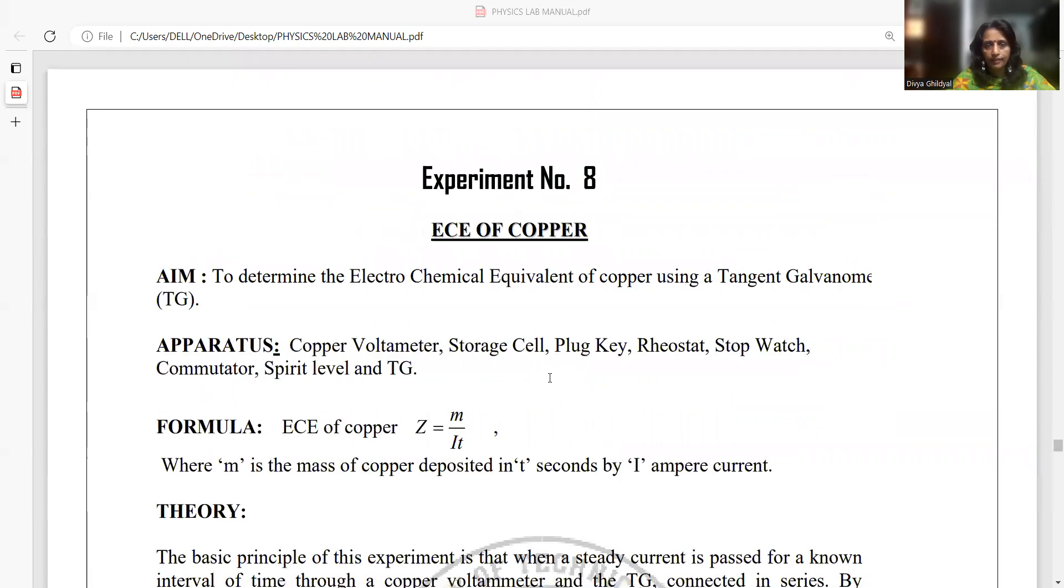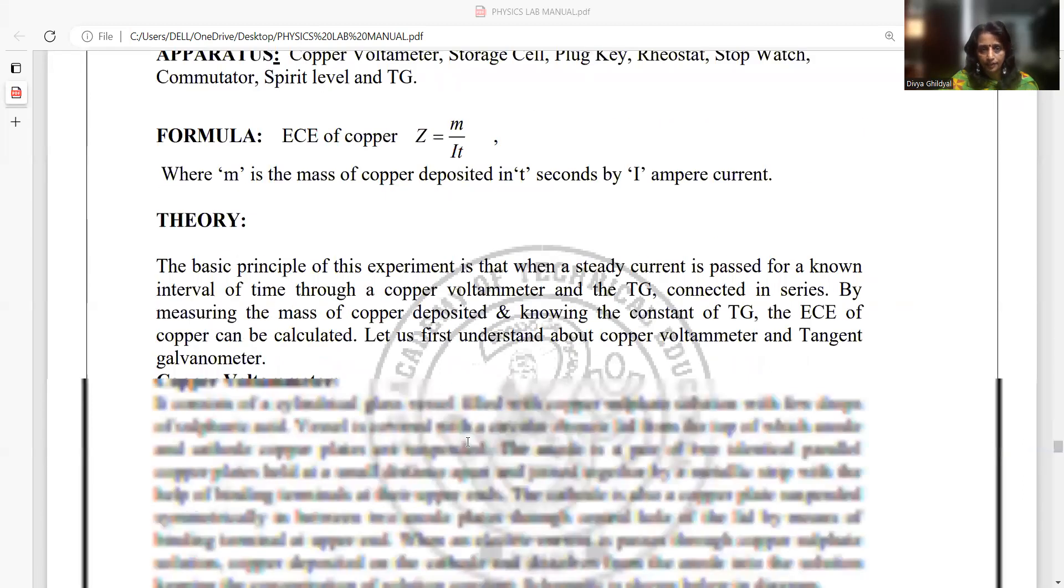Next, electrochemical equivalent of copper. My aim of experiment is to find the electrochemical equivalent of copper once again using a tangent galvanometer. Apparatus required is copper voltameter, storage cell, plug key, rheostat, stopwatch, commutator and tangent galvanometer. Formula used is ECE or electrochemical equivalent = mass / (current × time), or M = ZIT, or Z = M / IT, where M is mass of copper deposited in T seconds by I ampere current.